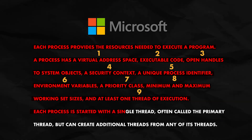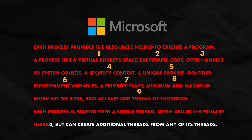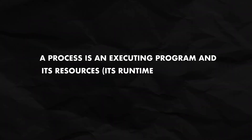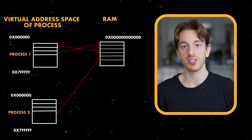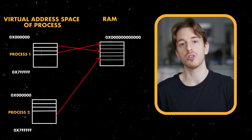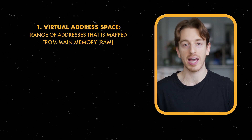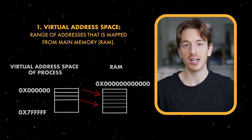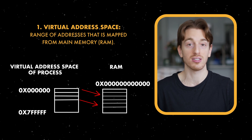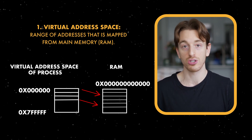Each process is started with a single thread, often called the primary thread, but can create additional threads from any of its threads. A process is an executing program that also provides the program with resources. A virtual address space is basically a range of addresses in RAM — it's called virtual because the memory the executing program accesses is mapped from the physical one. Two processes can have the same virtual address space but they will actually be mapped to different physical address spaces. This helps with efficiency of memory access and safety, so that one process doesn't access the memory of another — also known as a segmentation fault.